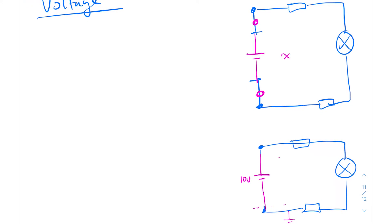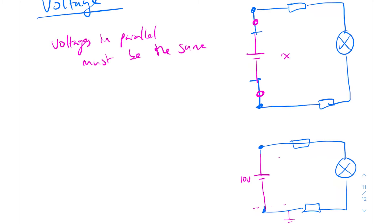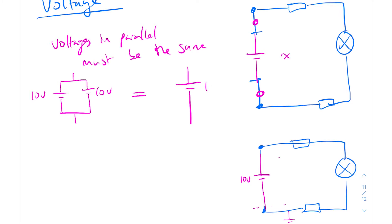To summarize: with voltages in parallel, they must be the same. So two 10-volt sources in parallel equals one 10-volt source. With voltages in series, you add them together - so two 10-volt sources in series equals one 20-volt battery.